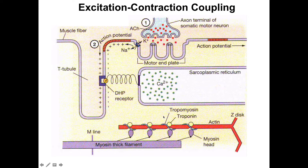Before we jump into talking about the disease, remember this picture. Do you see how at the top there, at the axon terminal of the somatic neuron, you have these secretory vesicles of acetylcholine fusing with the cell membrane and then being expelled into the synapse? Do you see how that is what's starting this whole action potential down the t-tubule, and then later the release of calcium and the contraction itself? This is pivotal to understanding diseases like myasthenia gravis.